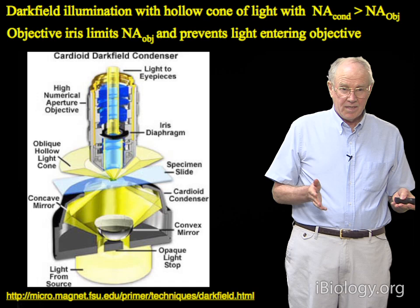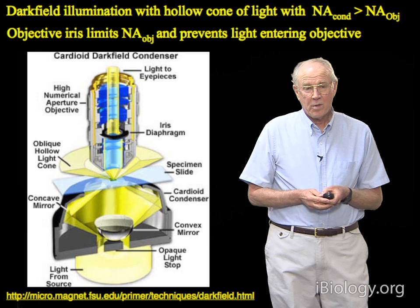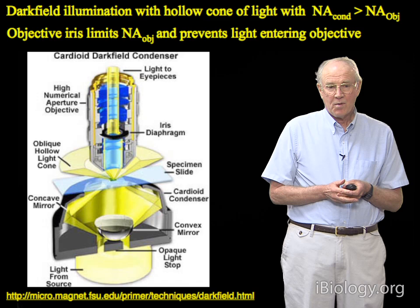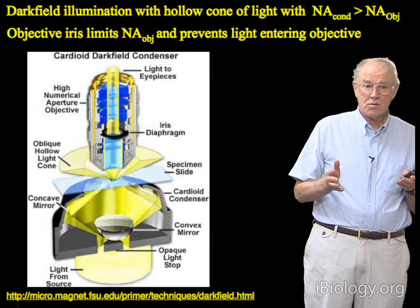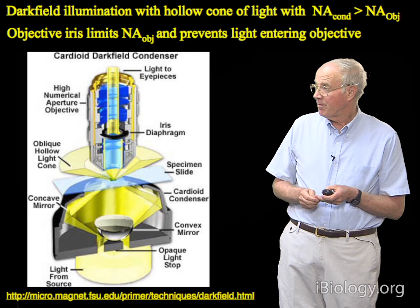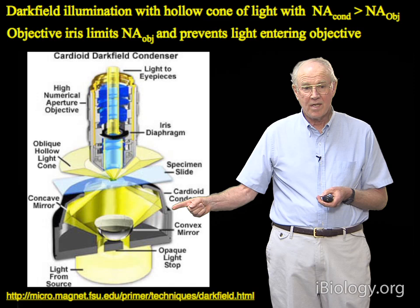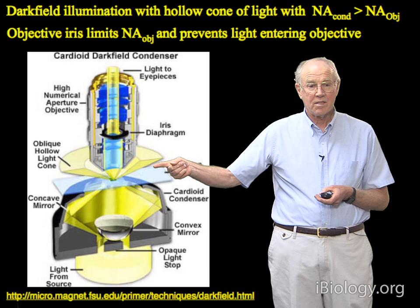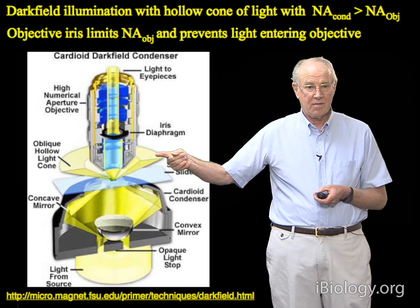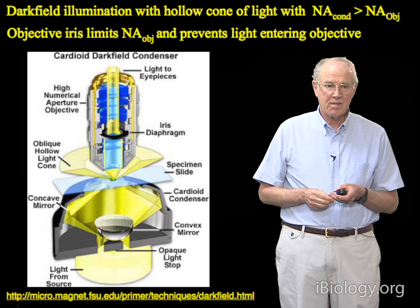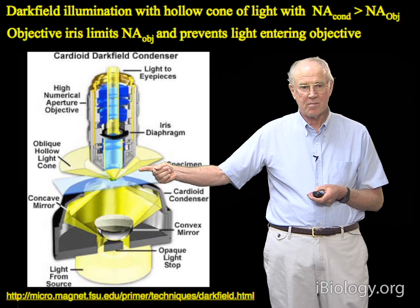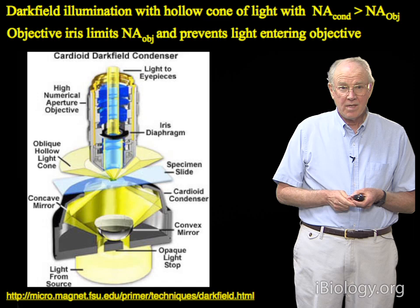Dark field as a microscopy technique is not done the way Zernicke did in his experiment. We want to have some resolution normally in dark field microscopy. The principle is the same, but one uses condensers that have an annulus of illumination whose numerical aperture — the refractive index in the specimen times the sine of the angle of illumination — exceeds the objective's acceptance. Special condensers are used to generate this high angular illumination. The angle of illumination produces a hollow cone of light that's not capable of being accepted by the objective numerical aperture, creating a dark field, and then the scattered light generated by this illumination is collected by the objective and focused as spots in the image plane.